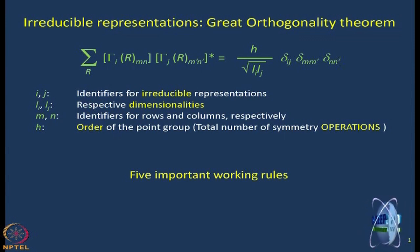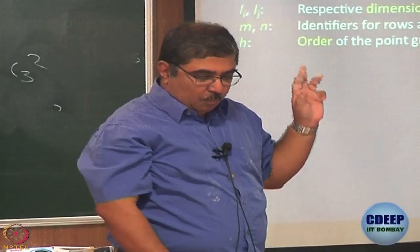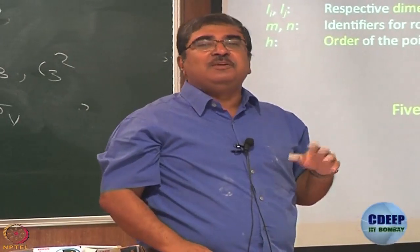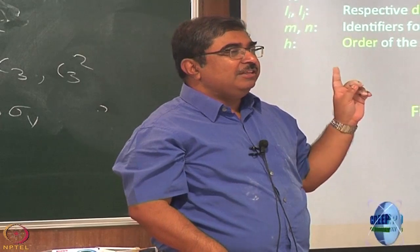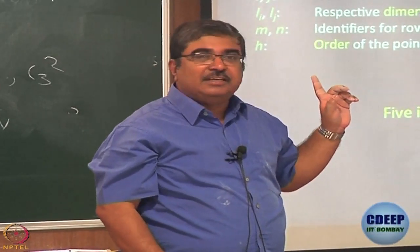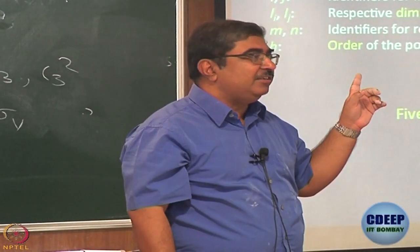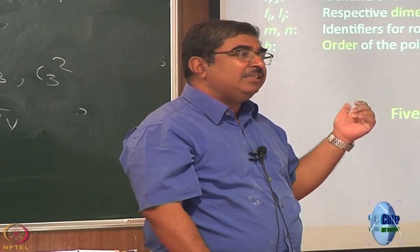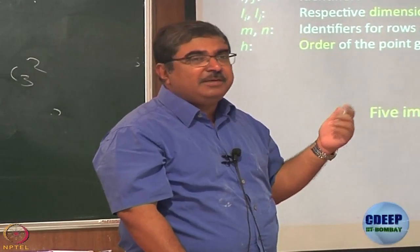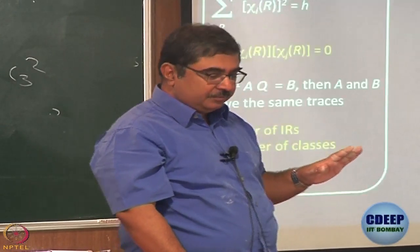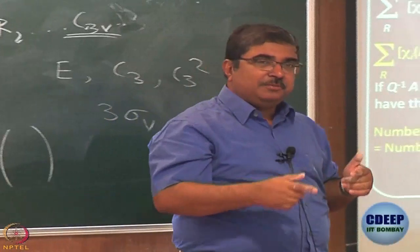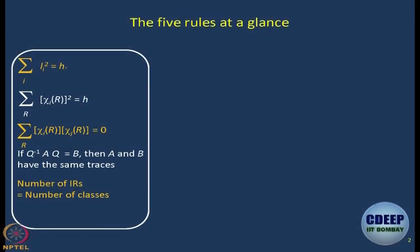This is only for the purpose of knowing where everything comes from. What we are really going to use are five important working rules that arise out of the Great Orthogonality Theorem. We are not going to derive those rules either — if you are interested, please look up Cotton's book. Cotton's book gives derivation of these five working rules from the GOT; they are pretty straightforward. Using these five working rules, we can work out the character tables of whichever point group we want — that's what we will do tomorrow.